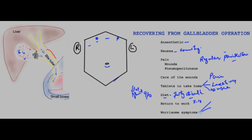Regarding worrisome symptoms: patients ought to let their healthcare providers know if they have a temperature after the operation, jaundice, increasing pain, a wound that becomes red and weepy, pain and swelling in the leg, recurrent vomiting, evidence of bleeding, or trouble going to the bathroom.